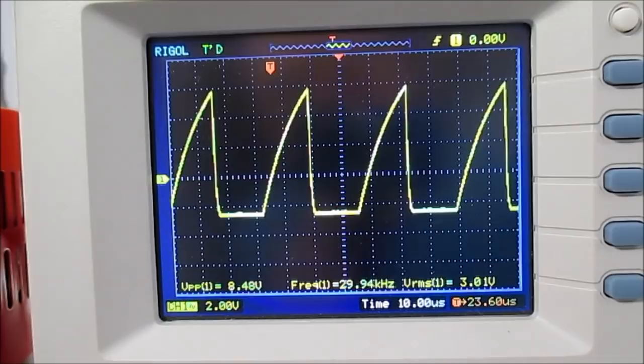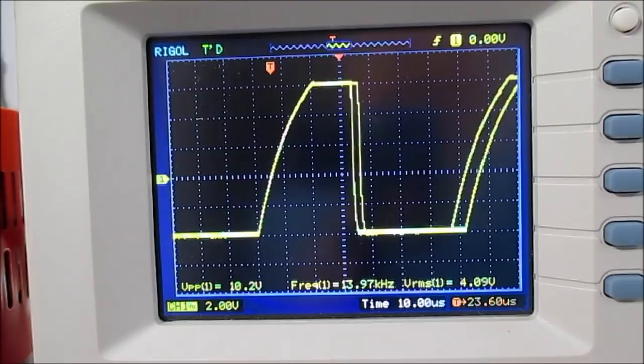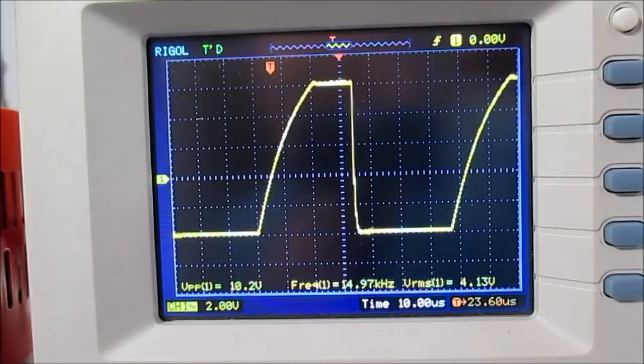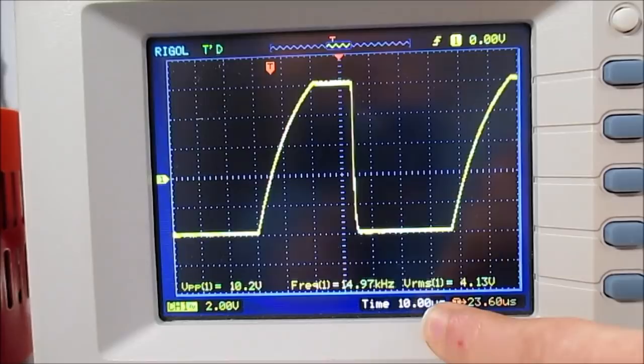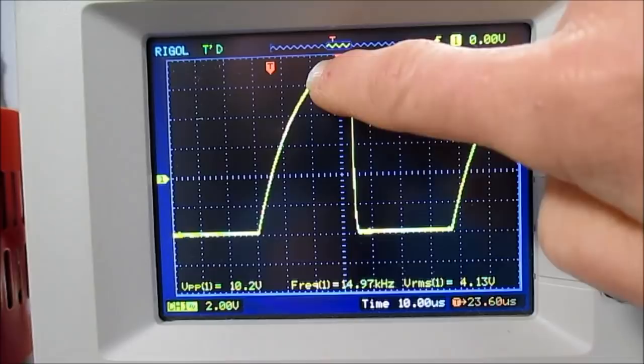See right there we are running at 15 kHz. And you can see, what are we, 10 microseconds per division here. And as this curve comes up, you know, we have about 10 volts peak to peak from the lowest level to the highest.